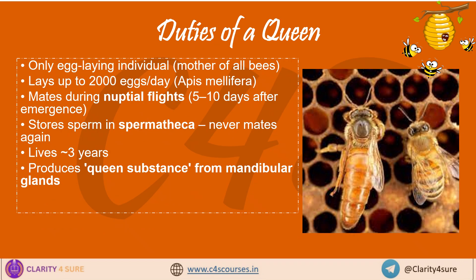Now let's discuss one by one all the castes of the honeybees and their duties, starting with the duties of the queen bee. The queen is the heart of the colony. She is the only bee that lays eggs — up to 2,000 eggs per day. After being born, she waits for 5 to 10 days and then flies out to mate with several drones. She stores the sperm inside a special pouch called the spermatheca, then uses it to lay fertilized eggs for the rest of her life, which can last up to 3 years.